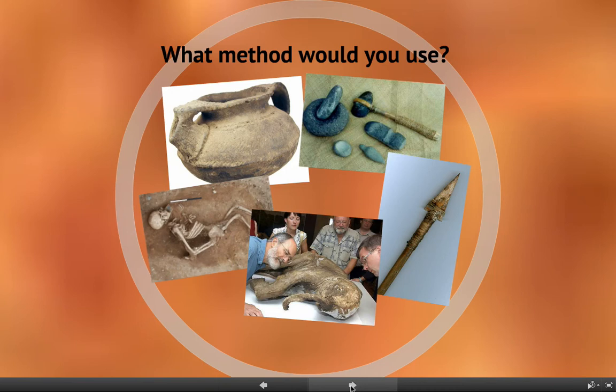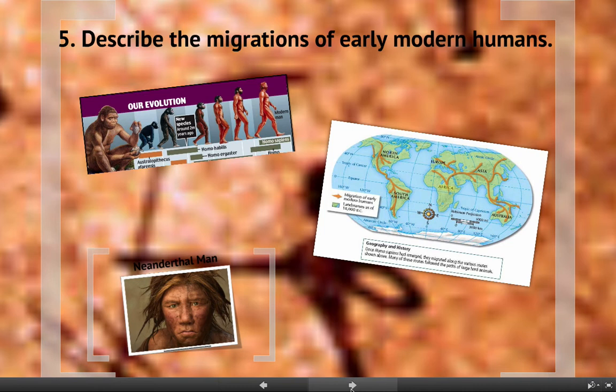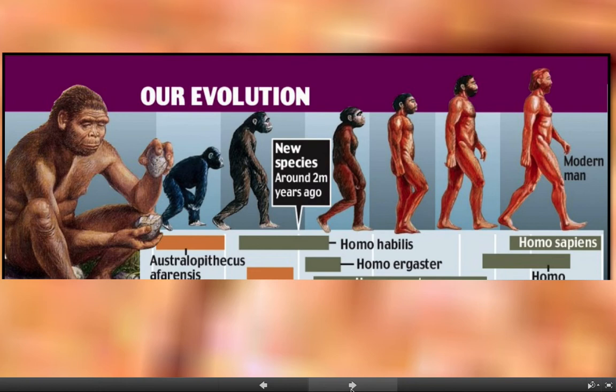Our last lesson objective was to describe the migrations of early modern humans. We're going to look at this chart showing our evolution. Before modern humans — before us — there were dozens of human-like animals that lived on the face of the earth, all of which at some point became extinct. We are the only humans still living on the face of the earth; all others did become extinct.